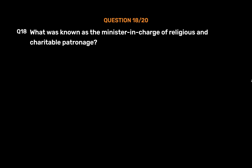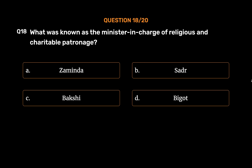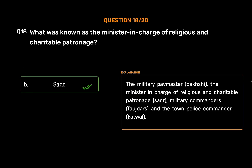Question 18: What was known as the minister in charge of religious and charitable patronage? Option A: Zaminda. Option B: Sadar. Option C: Bakshi. Option D: Bigot. The correct answer is Option B, Sadar. The Bakshi was the military paymaster. The minister in charge of religious and charitable patronage was the Sadar. Military commanders were called Foujdars, and the town police commander was the Kotwal.